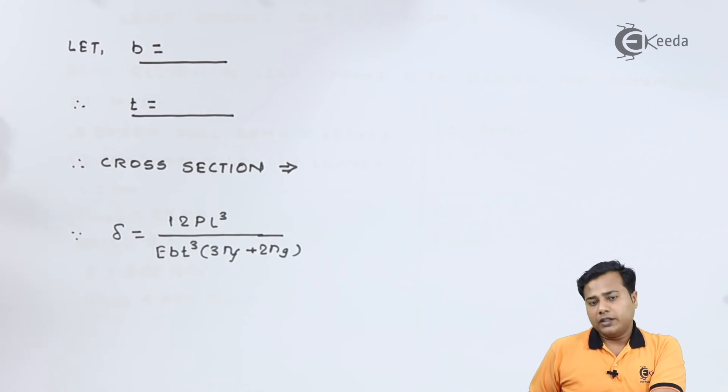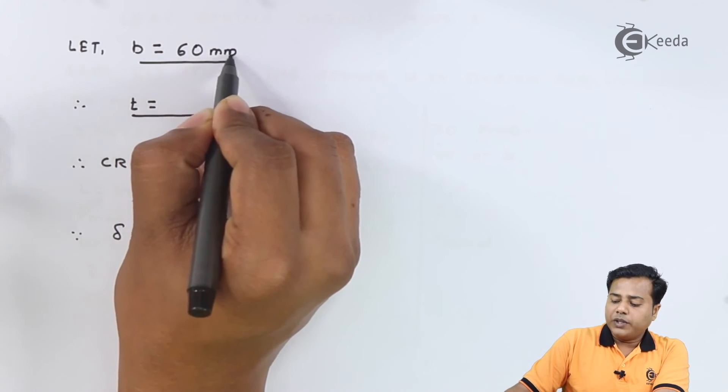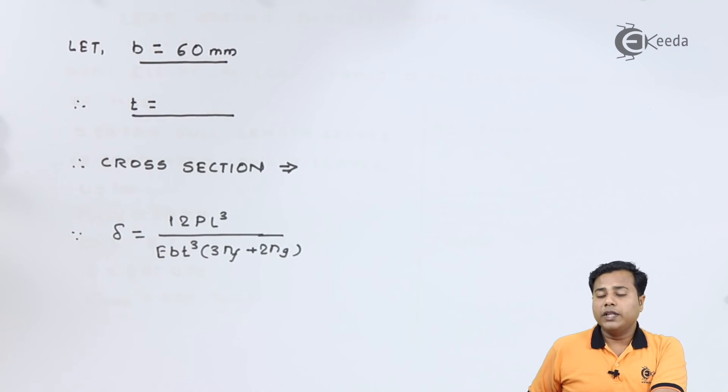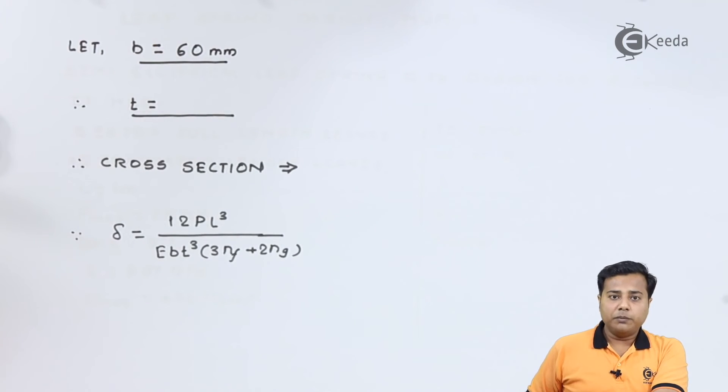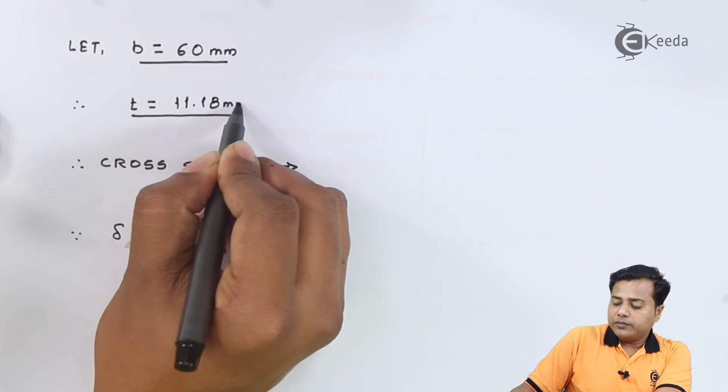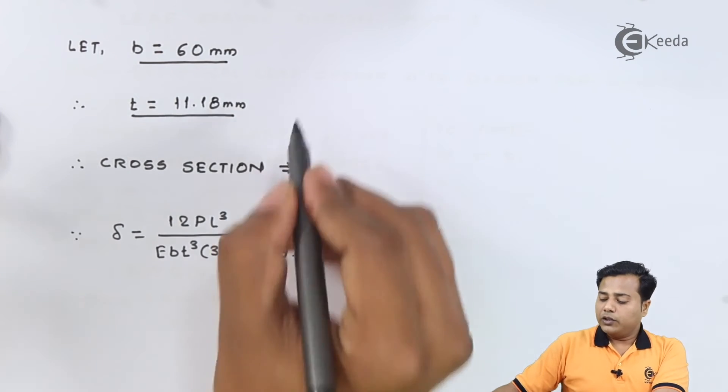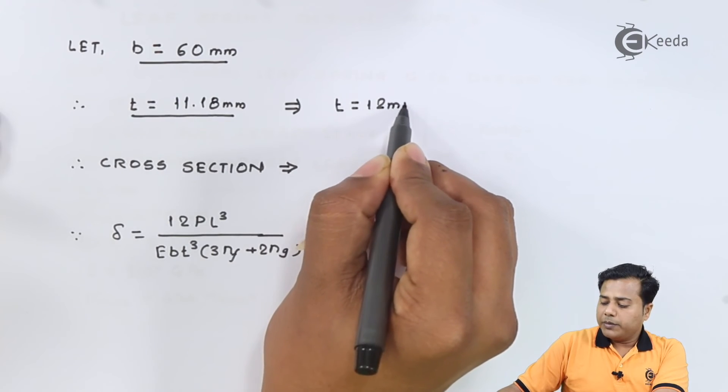Let b equal 60 millimeter which is one of the standard values of the width of a leaf. After substituting this value in the previous expression we will get the value of t equal to somewhere around 11.18 millimeter. Let us conclude the preferred value is 12 millimeter.